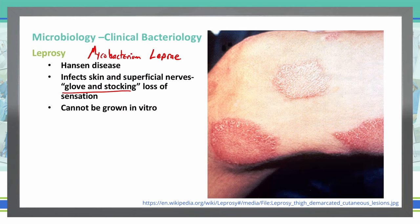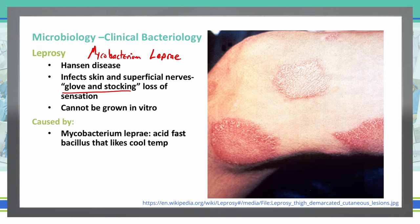Mycobacterium leprae is an acid-fast bacillus that likes cool temperatures. So one of the places that we can see these often in the United States is going to be in armadillos.